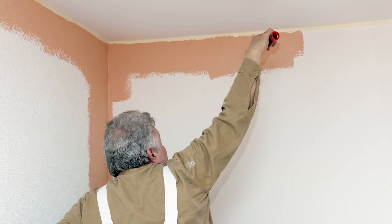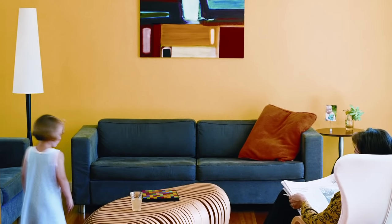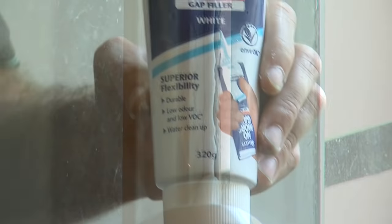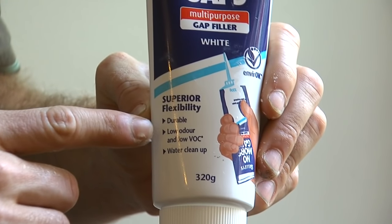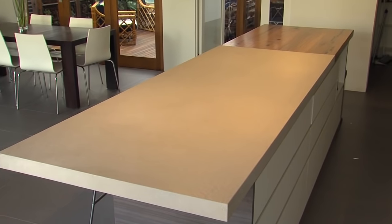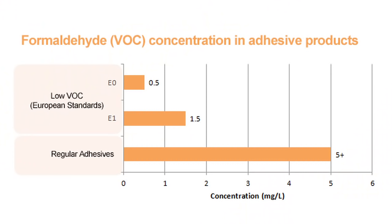Adhesives used in construction typically contain substances called volatile organic compounds, or VOCs. Site workers will be most exposed, but they can also affect the people living in the home, particularly in the early stages of occupation. When buying adhesives, choose products with low or ideally no VOC content. These are now commonly available in hardware stores. The same also goes for products which contain adhesives such as carpets, vinyl and joinery. E1 standard is good and E0 standard is the best available.